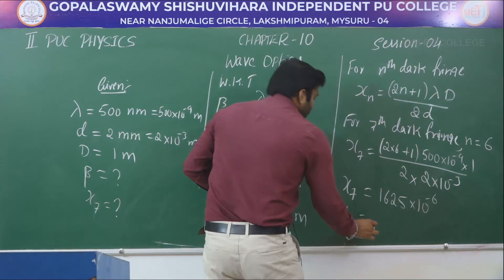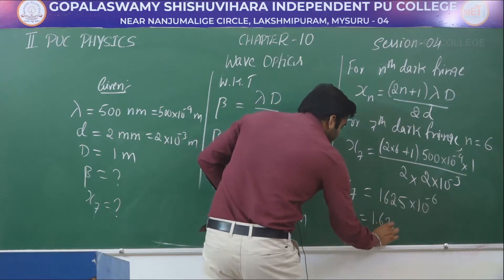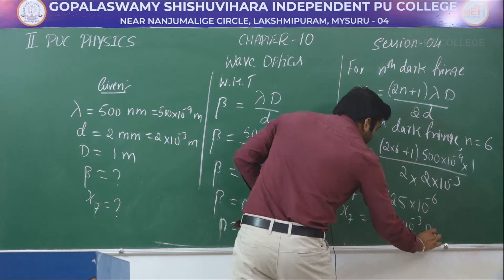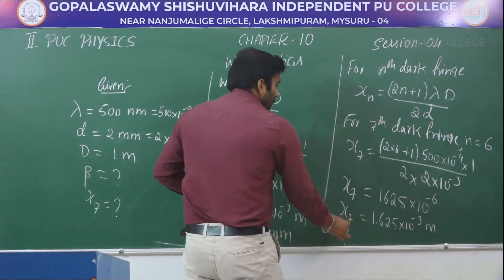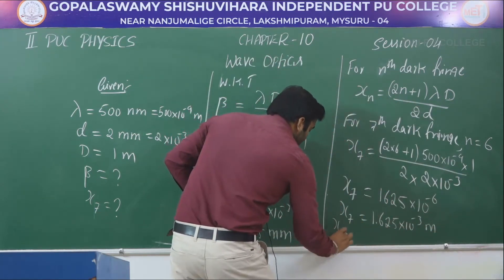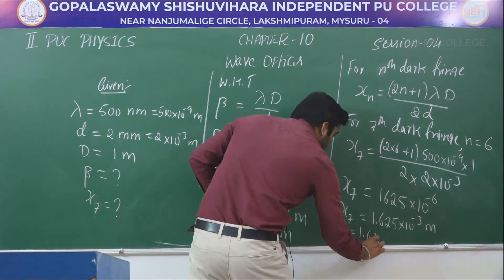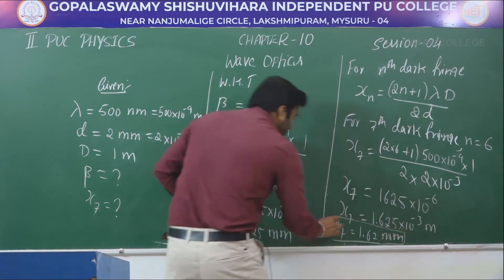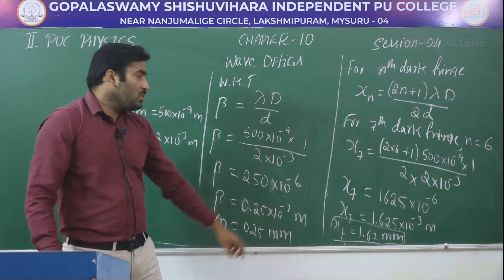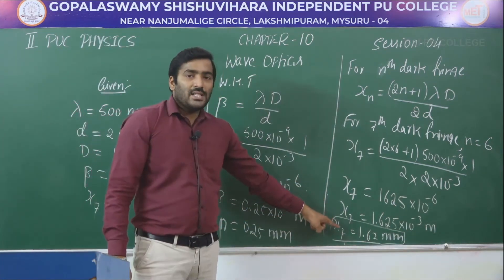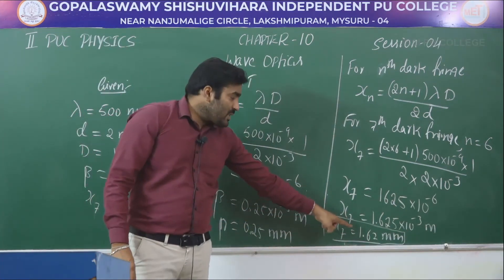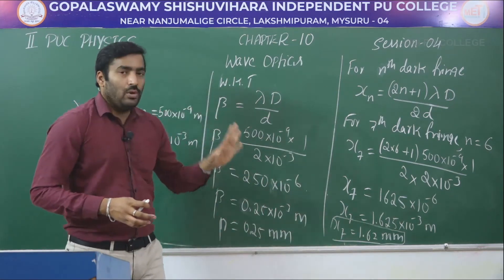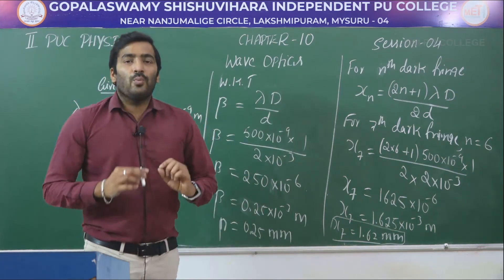That is 1.625 × 10⁻³ meter, or x₇ = 1.62 millimeter. The position of the 7th dark fringe is 1.62 millimeter from the central fringe. We will move on to the next problem.